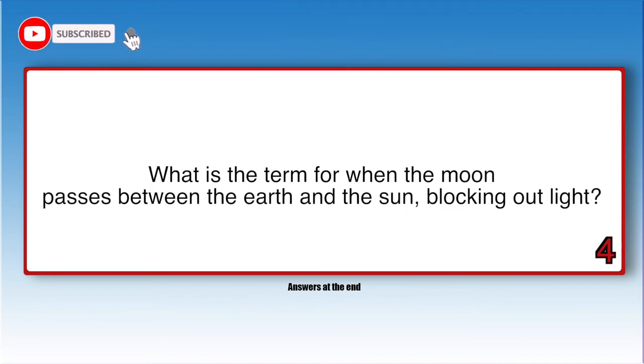What is the term for when the moon passes between the earth and the sun, blocking out light?